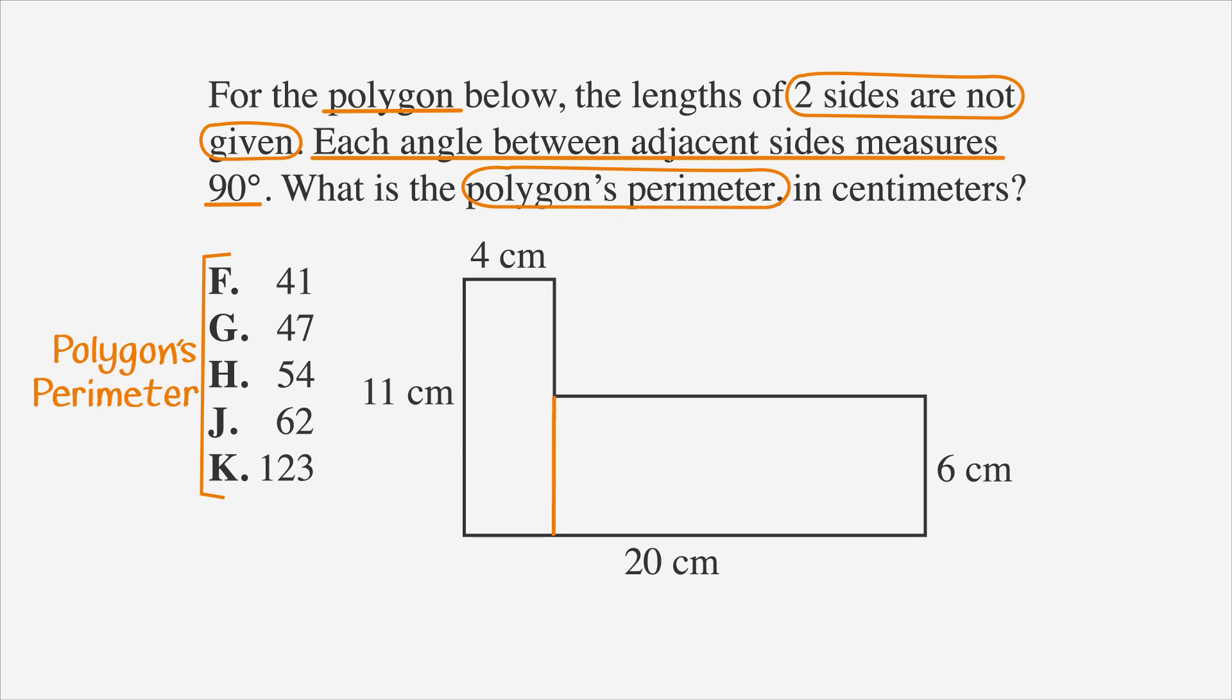Because we know that opposite sides of a rectangle are equal, we can divide the side labeled as 20 into two line segments, one that's 4 centimeters long to match its opposite side, and one that's 16 centimeters long. We can then label the side opposite the 16 side as 16 as well. Because we know that the height of the left-hand rectangle is 11, we can say that the last side is equal to 11 minus the height of the other rectangle, or 11 minus 6, which is 5.